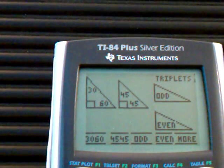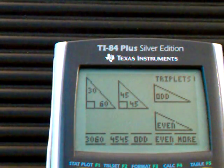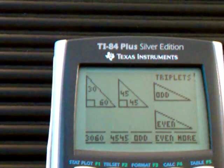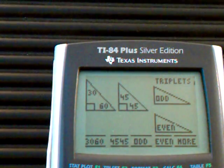As you can see from the main menu, it doesn't really matter where you start, but the first option is a 30-60-90 triangle, then a 45-45-90 triangle, then an odd triplet, and an even triplet.